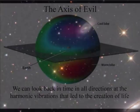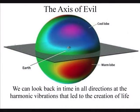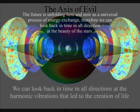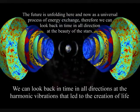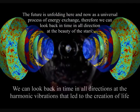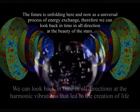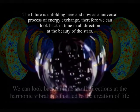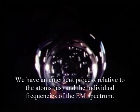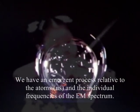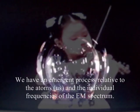Scientists named this the axis of evil because of the damage it could do to current big bang theories. But this axis could represent a timeline that formed life, giving us the ability to look back in time at the harmonic vibrations that led to the creation of life, with life being able to form its own harmonic ripples in the fabric of space-time in the form of music, art, and poetry.